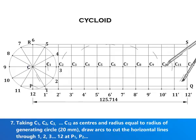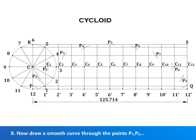draw arcs to cut the horizontal lines through 1, 2, 3, etc. at P1, P2. Now, draw a smooth curve through the points P1, P2, P3.